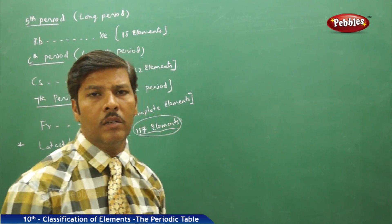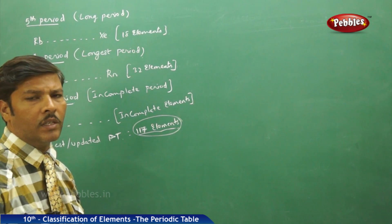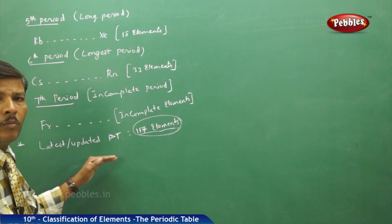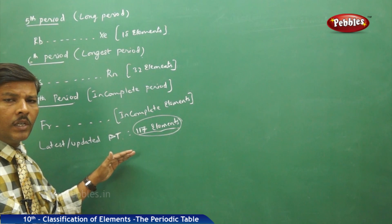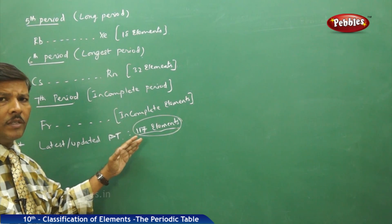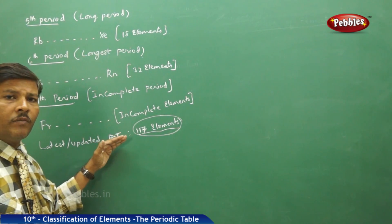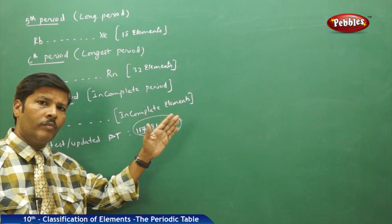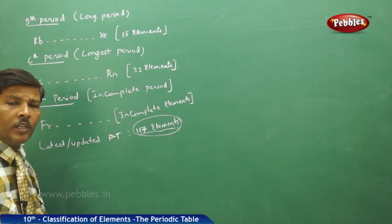So far we have discussed the alignment of elements across a period in the modern periodic table. When we speak about groups and periods, vertical columns are groups and horizontal rows are called periods. Whenever you say periods, we say 'across a period,' and whenever you say group, we say 'down a group.' Elements are arranged across the period — that is horizontal, from left to right — and down the group means from top to bottom.